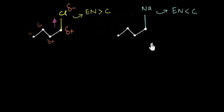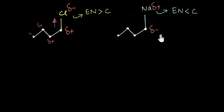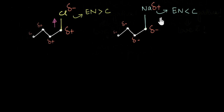Instead of a more electronegative element, what if we had a less electronegative element? Take sodium — a metal attached to a carbon atom. Metals hate electrons, so the electronegativity of carbon is much higher than sodium. The electrons in this bond will be more towards carbon, giving carbon a partial negative charge and sodium a partial positive charge. Because C1 is now slightly negative, it pushes electrons in the next bond away, leading to a slight negative charge on C2, which pushes electrons further, inducing partial negative charge along the chain.